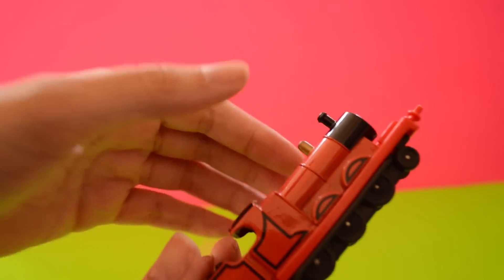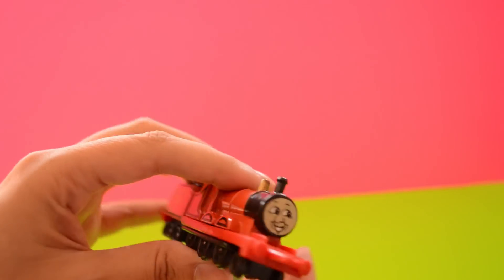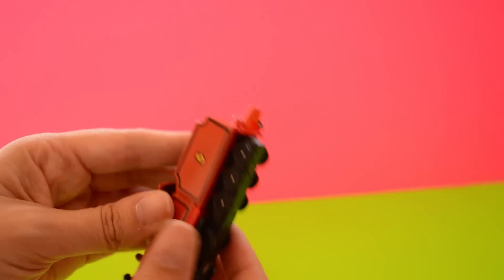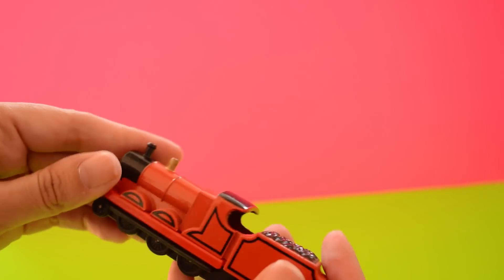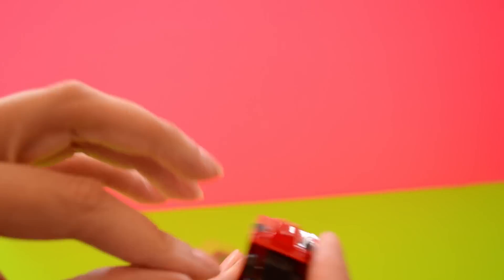Watch my paint work. This is, is this James number five? In any case, he is red, so of course I'm thinking he's James, and he's got a tender with some coal in it and another sticker face, and these stickers are coming off right here.